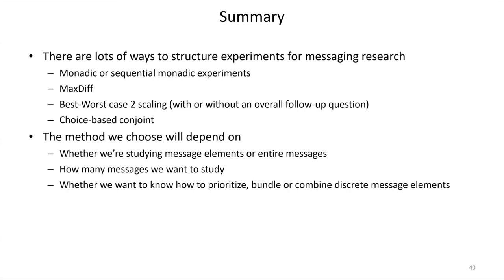How can you combine attribute scores in best worst case two — for example, comparing the range of utilities for attributes one through five versus attributes six through eight? In best worst case two, you can combine utilities — taking one item from each of your categories and comparing that bundle to another bundle drawn one per category. The utilities in best worst case two are intended to be additive in that way. You can't do that with max diff — the scaling on max diff is such that utilities are not intended to be additive across categories.